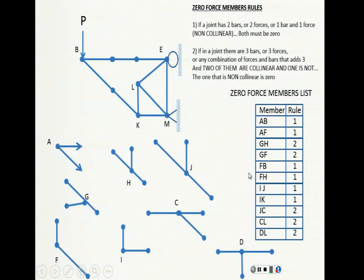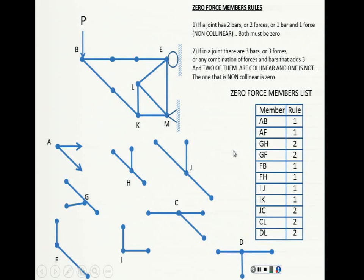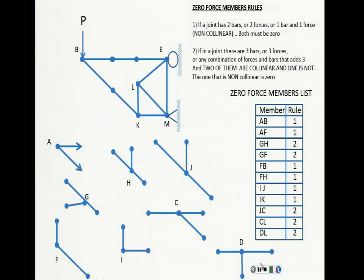The same reasoning goes for any truss. In any truss, you can find all the zero force members just by inspection and applying these two very simple rules. See you next video lecture, guys, and see you in class also. Thank you for watching.